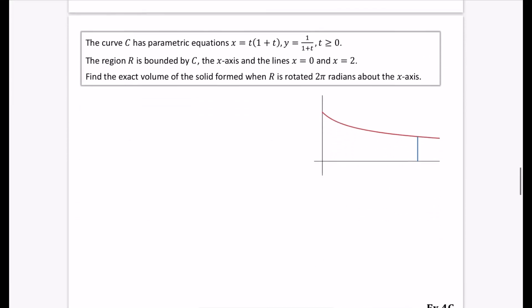So just one example and then you can try the exercise. The curve C has parametric equations x equals t(1+t), y equals 1/(1+t), and t is greater than or equal to 0. The region is bounded by C, the x-axis and the lines x equals 0 and x equals 2. So here's my 0 and here's my 2 and I'm wanting to rotate it about the x-axis.